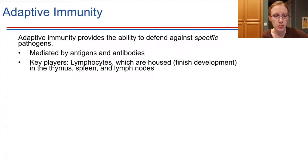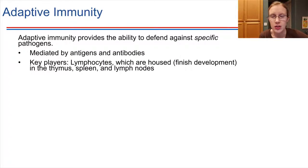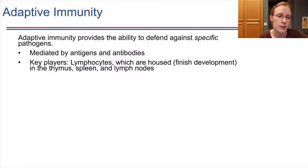For adaptive immunity, the key players are lymphocytes. Lymphocytes are cells of the immune system, and they're housed in the thymus. Our blood cells are made in the bone marrow, but for lymphocytes, they travel to the thymus and finish development there. So they end up being housed in the thymus primarily, but also the spleen and lymph nodes.